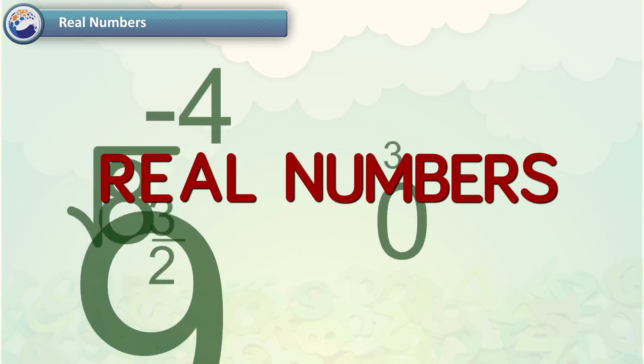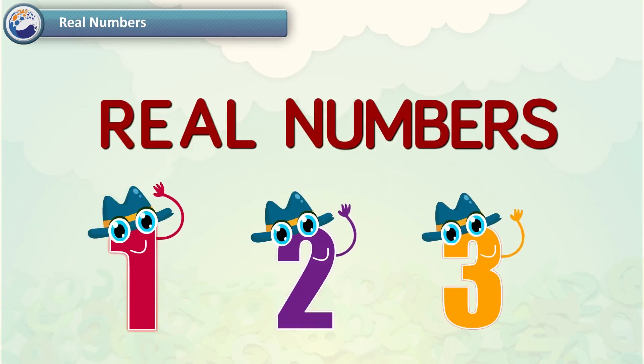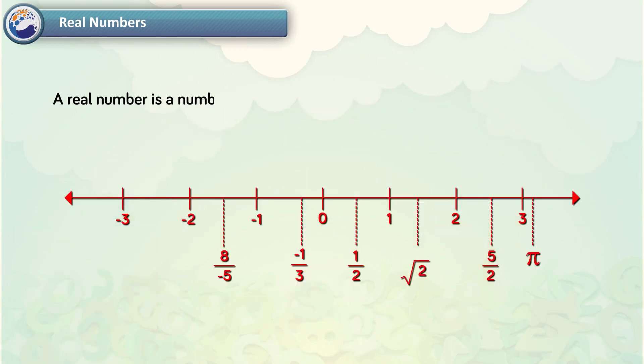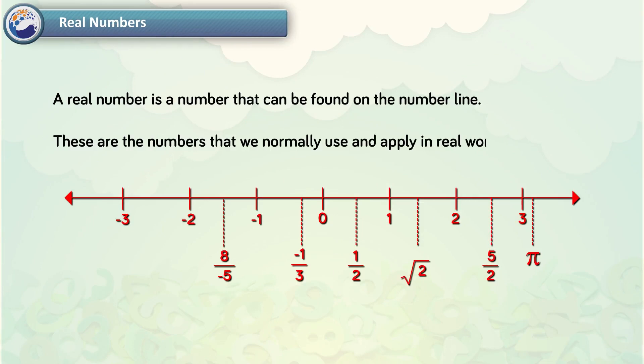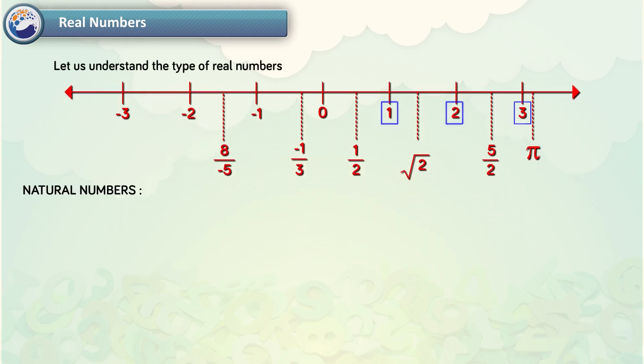Real Numbers. A real number is any number that can be found on the number line. These are the numbers that we normally use and apply in real-world applications. Let us understand the types of real numbers.